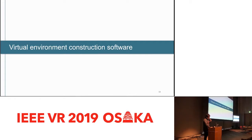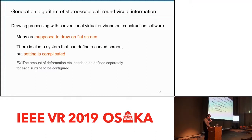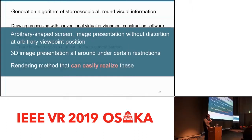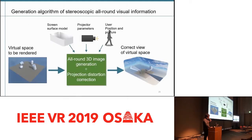Next, we will be talking about virtual environment construction software. In many projection software, the screen shape is a flat screen, while setting of curved surface projection is complicated. Therefore, we propose a rendering method that can be easily implemented to perform 3D image presentation at any screen shape and any viewpoint position. This slide is an overview of the projection algorithm. The rendering algorithm is composed of 3D image generation and projection distortion correction. These work with screen shape, projector parameters, and viewpoint position.